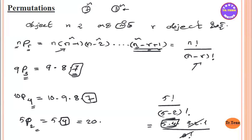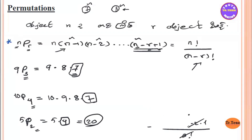Now we have to look at the final formula. We can get the permutation formula: NPR equals N times N-1 times N-2 and so on times N-R plus 1, which equals N factorial divided by N minus R factorial.